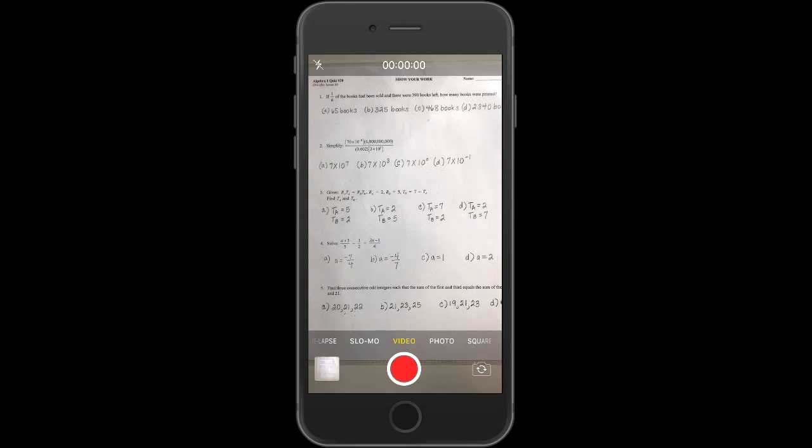I'm going to review the Algebra Quiz 20 problems. Most people missed either one, two, or number five, but I'm going to work out all the problems to show you.